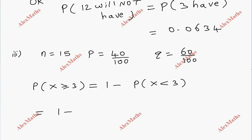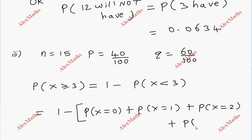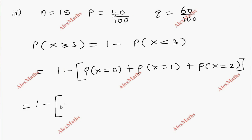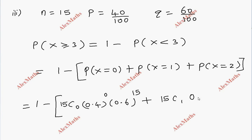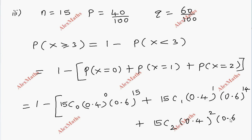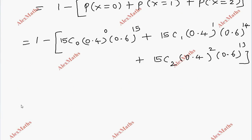Expanding: P(x ≥ 3) = 1 − [P(x=0) + P(x=1) + P(x=2)]. That is 1 − [15C0 × (0.4)^0 × (0.6)^15 + 15C1 × (0.4)^1 × (0.6)^14 + 15C2 × (0.4)^2 × (0.6)^13].